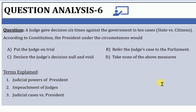Under Article 141, the president can seek the opinion of the Supreme Court on matters of law or fact — any kind of suggestion or opinion on a law point. Judicial cases versus the president means that a judge who gives many judgments does not have any direct relation with executive action. Based on the pros and cons of the cases, the judge delivers his decision. It has no direct relation with the action of the president; therefore it is totally irrelevant. The answer is D.